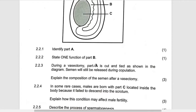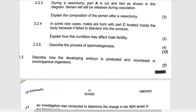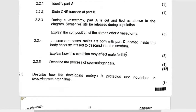Then they are saying: during vasectomy — that is cutting — when you talk about vasectomy, it is the cutting of the vas deferens. A is cut and tied as shown in the diagram, so semen will not be released during copulation. Explain the composition of semen after vasectomy.